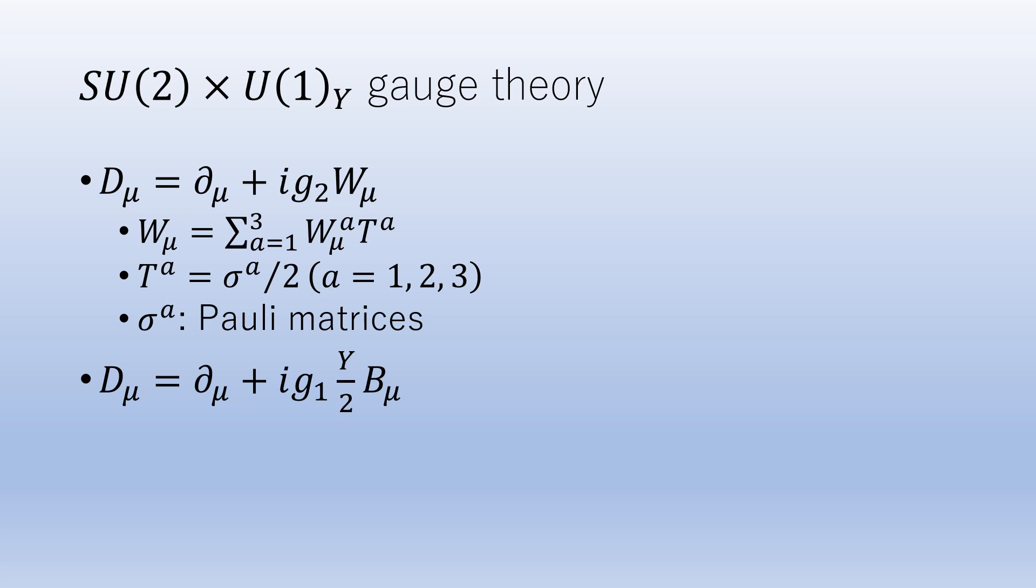G₁ is the U(1)_Y gauge coupling constant, and Y is the U(1)_Y charge measured in units of G₁. B is the gauge field associated with the U(1)_Y gauge invariance.